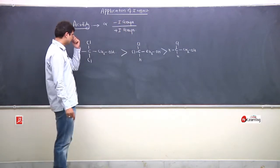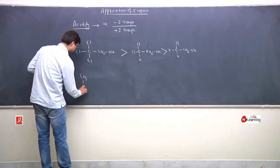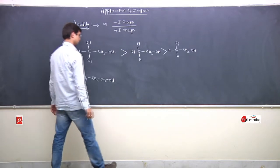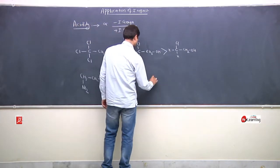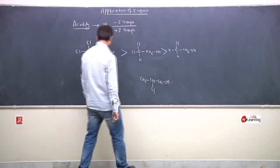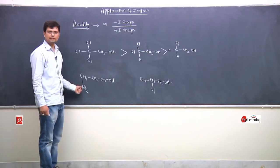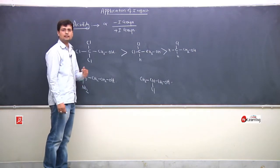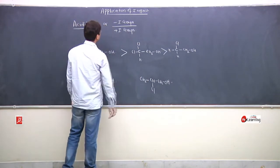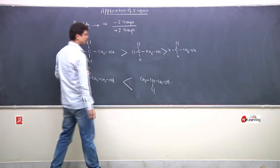Now let's look at a question: CH2NO2 versus CH2CH2OH with Cl. You know that distance is a major factor. Here Cl is a weaker minus-I group but the distance is less. Here NO2 is a strong minus-I group but the distance is more. Distance is the major determining factor, so the Cl compound has greater inductive effect, greater acidity.